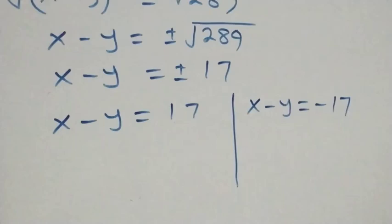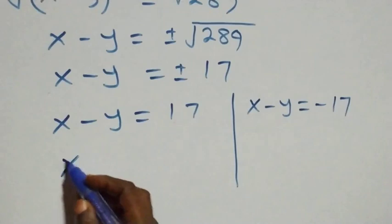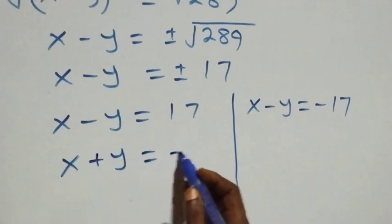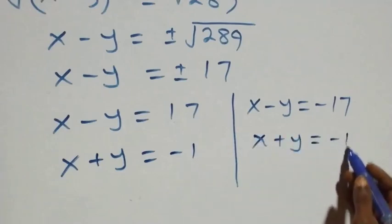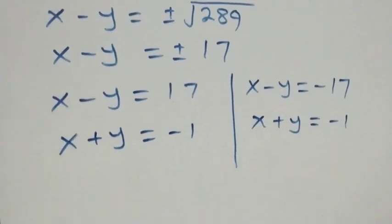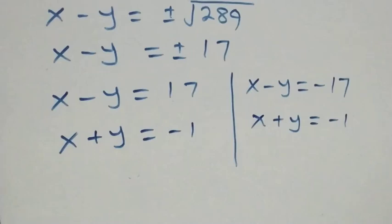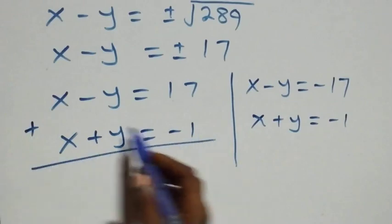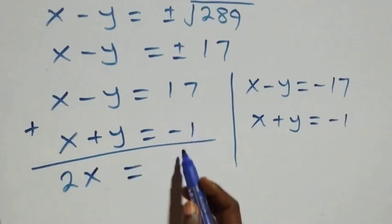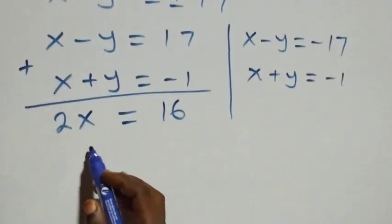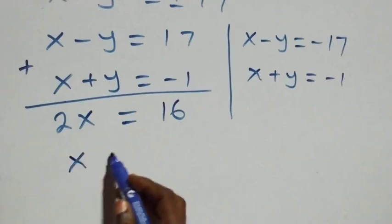Let's solve these simultaneously with equation three. From equation three, x + y = -1. For case one, x - y = 17 and x + y = -1. Adding these two equations eliminates y, giving 2x = 16, so x = 8.